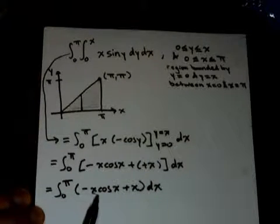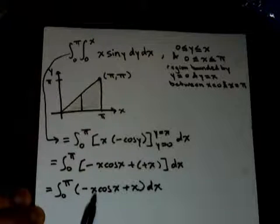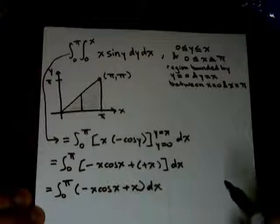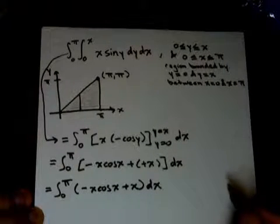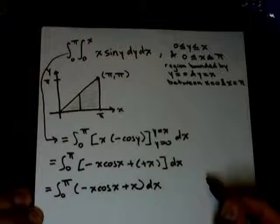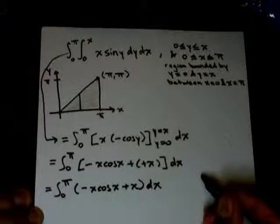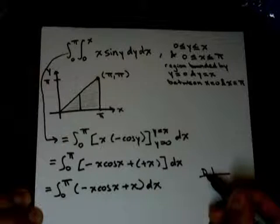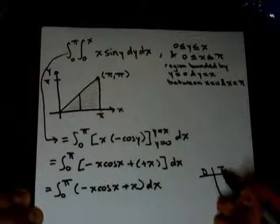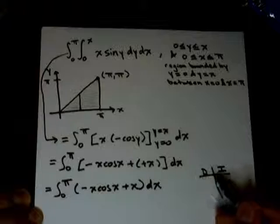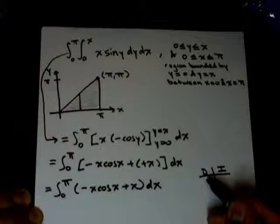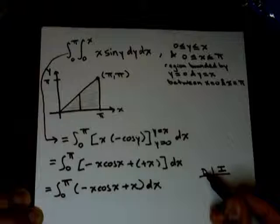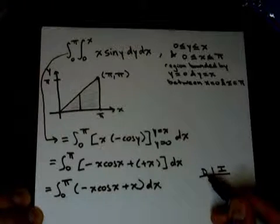Just make two little columns: whichever function we're gonna differentiate and integrate. Usually you want to pick the function you're gonna differentiate that's gonna eventually disappear and become a constant, then we take a derivative that's gonna be zero.